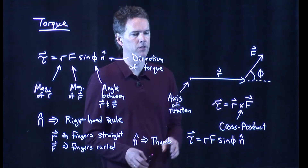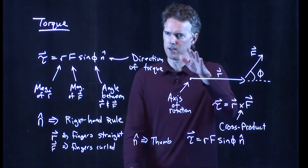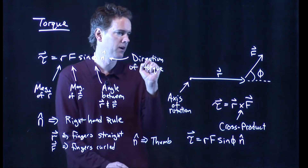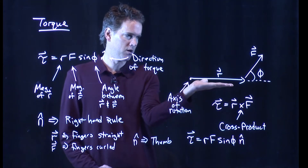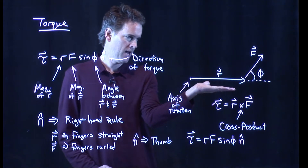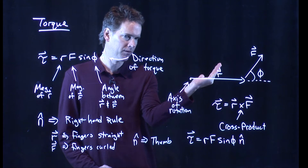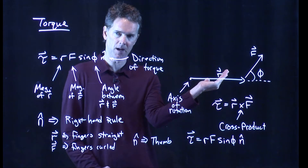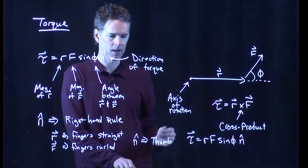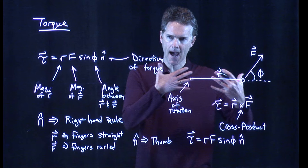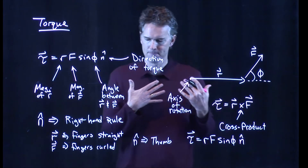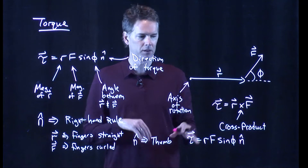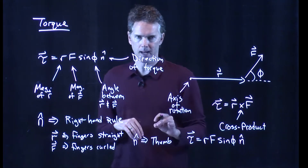Let's try this for this particular case. Everybody in the audience, raise your right hand. Now look at the screen — put your fingers straight into the direction of R, so that should be to your right. And now curl them slightly into the direction of F. Which way is your thumb going — out of the screen or into the screen? It's out of the screen. So in this case, the direction of torque is out of the screen. This takes some practice with more complicated geometries, and in your math courses you will deal with the cross product and the right hand rule even more extensively.